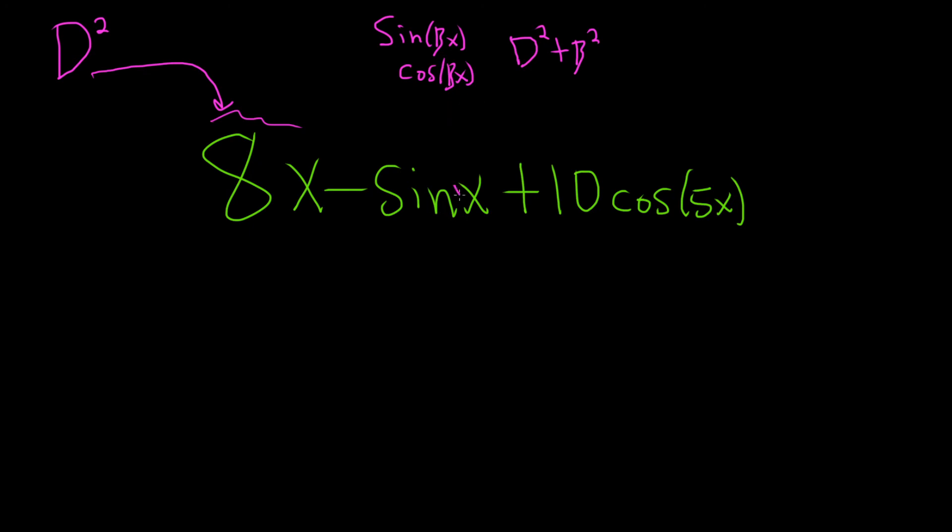So here we have beta equals 1, and here we have beta equals 5. So for this one, we can use d squared plus 1 squared, so d squared plus 1. And for this one, we can use d squared plus 5 squared, so d squared plus 25.